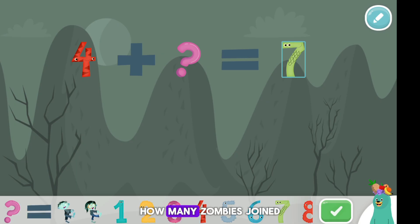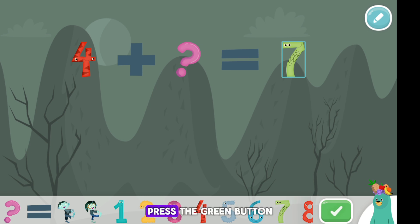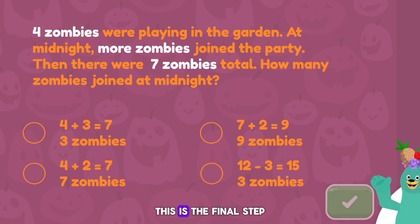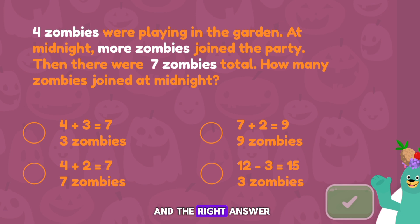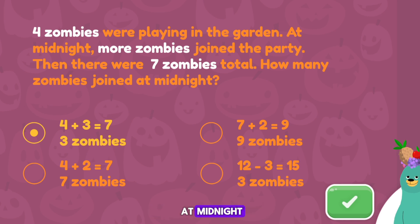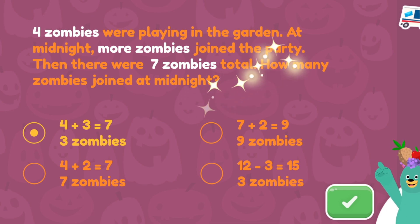How many zombies joined at midnight? Use the stickers to figure it out. Press the green button when you're done. This is the final step. Pick the option that has the correct equation and the right answer. Four plus three equals seven. Three zombies joined at midnight. Good work!